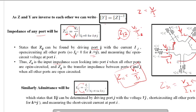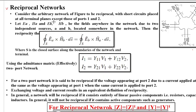Welcome to this next lecture. Last lecture I discussed the Z parameters of a network and how to find them. Today we will be discussing what is called a reciprocal network. A reciprocal network is one in which, from any side, if you see the network, it looks the same.